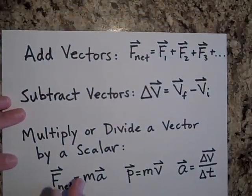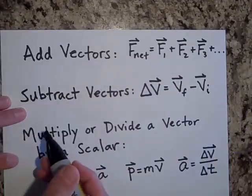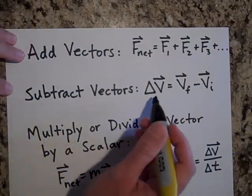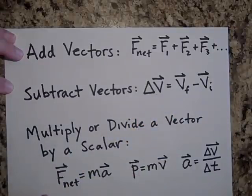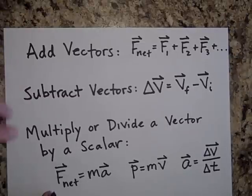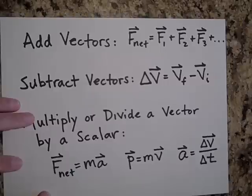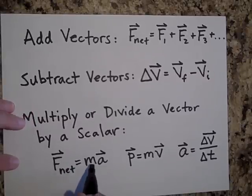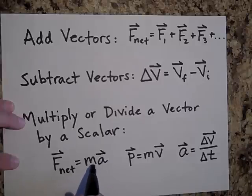To review: last year you learned how to add vectors — maybe to find the net force, you added F1 plus F2 plus F3. You also learned how to subtract vectors, for example to find delta-v equals v-final minus v-initial. We've also multiplied and divided a vector by a scalar — any time you do F-net equals ma, the m is a scalar and a is a vector, and F-net will always be in the same direction as a.